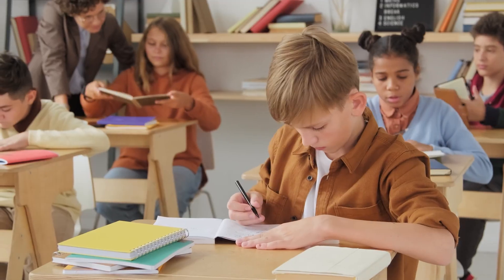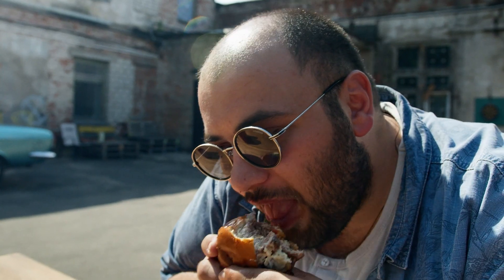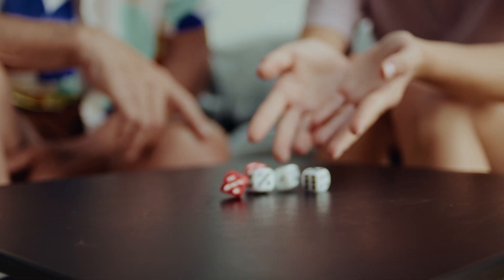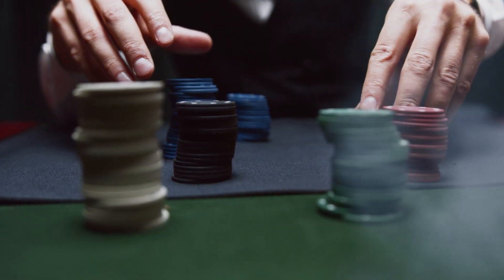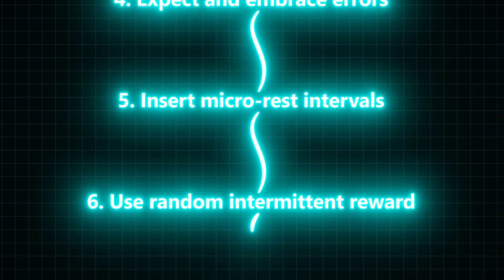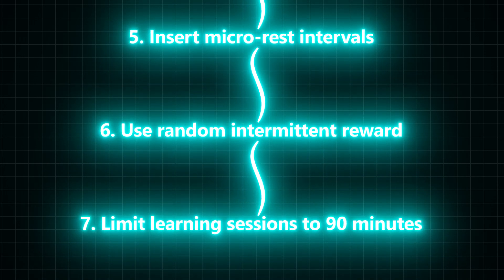Step six: use random intermittent reward. Rewards are closely linked to motivation and the desire to pursue things, including learning. The question is how often should we reward ourselves — and the answer is to make it random and intermittent. This is what casinos do to keep people gambling, and it just works. Predictable rewards lose their motivational impact quickly.